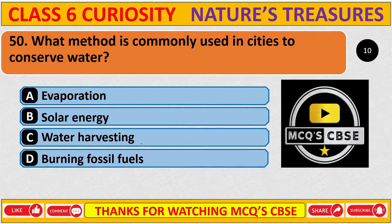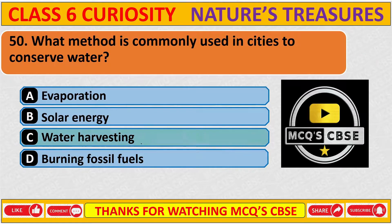What method is commonly used in cities to conserve water? The correct answer is C: Water harvesting.